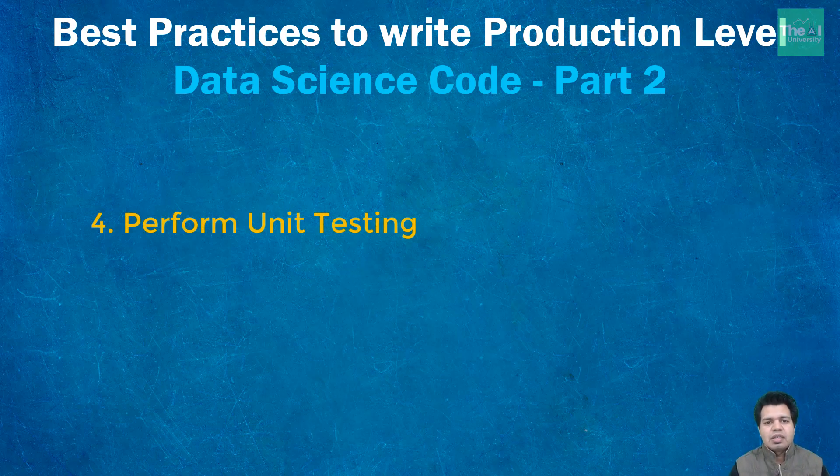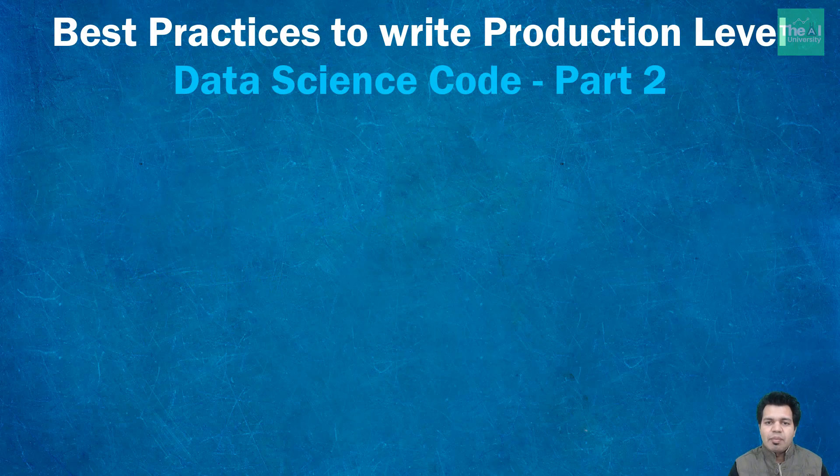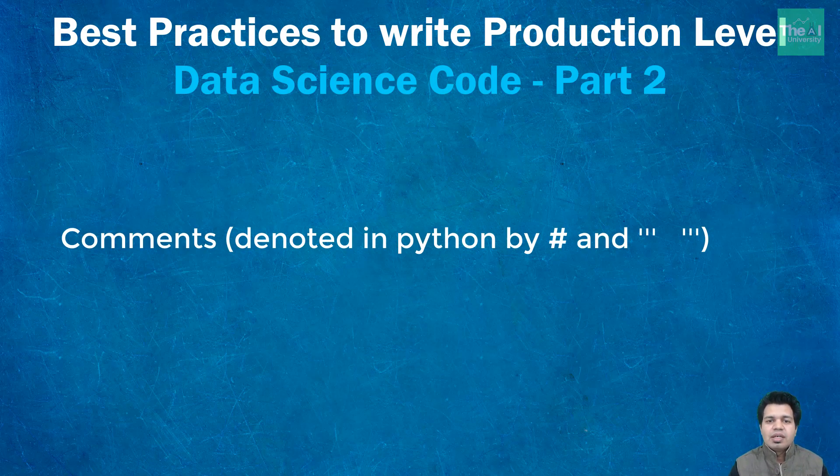So the next best practice in the list is readability. It's always a good habit if your code accompanies some kind of explanation on what that line of code or function or code snippet is doing so that it's easy for other fellow developers or data scientists in the team to understand your code. So let's go one by one what are the several ways we can make our code neat and readable. So the number one is comments. You can include a comment to describe what a particular line or section of the code is representing. Let me open my Jupyter notebook real quick to show you what exactly I'm talking about.